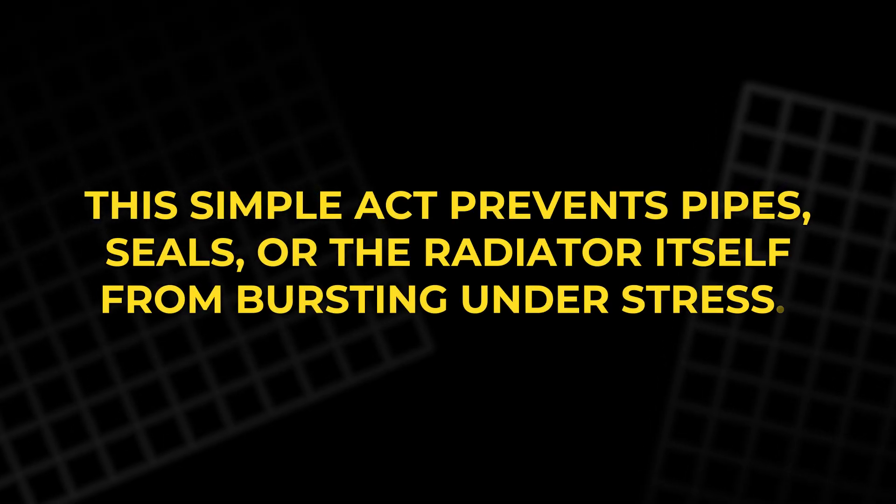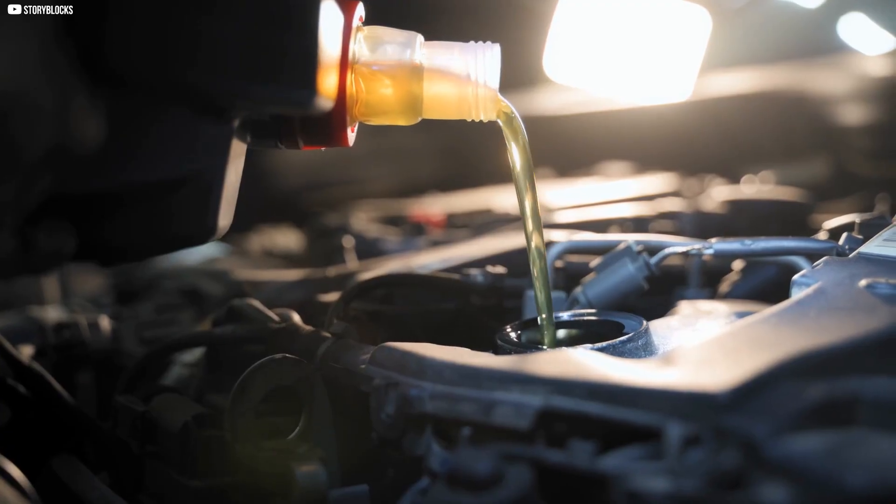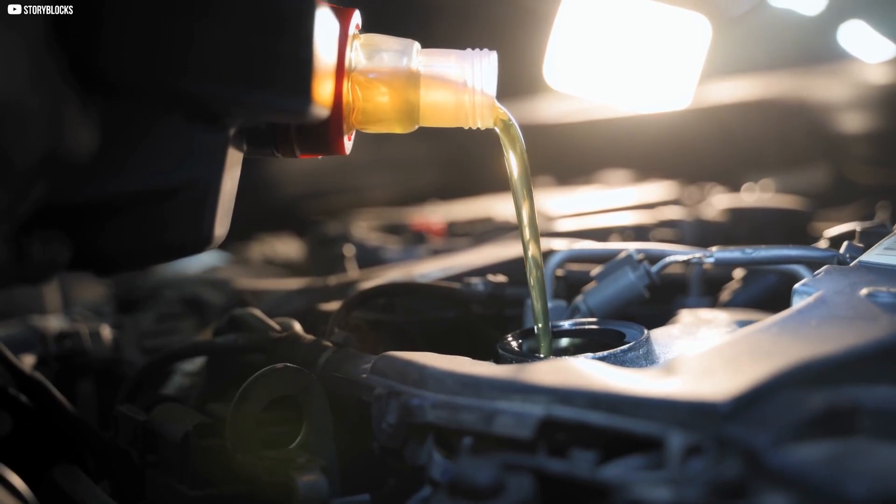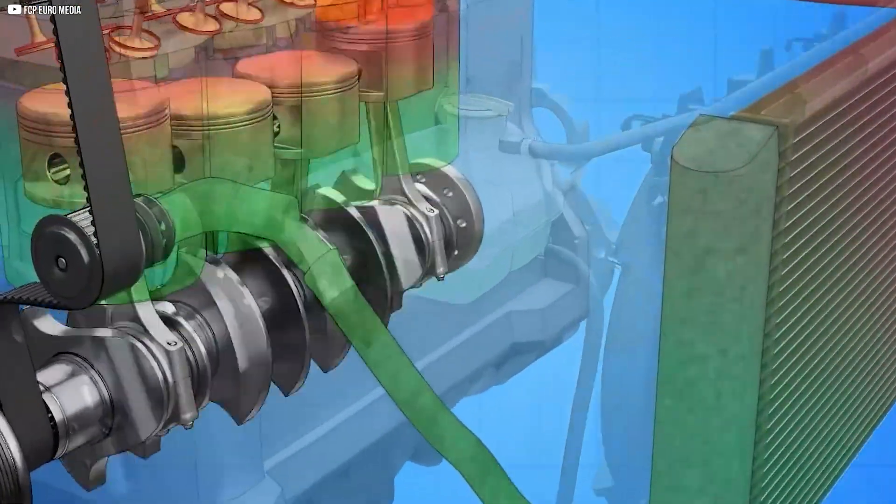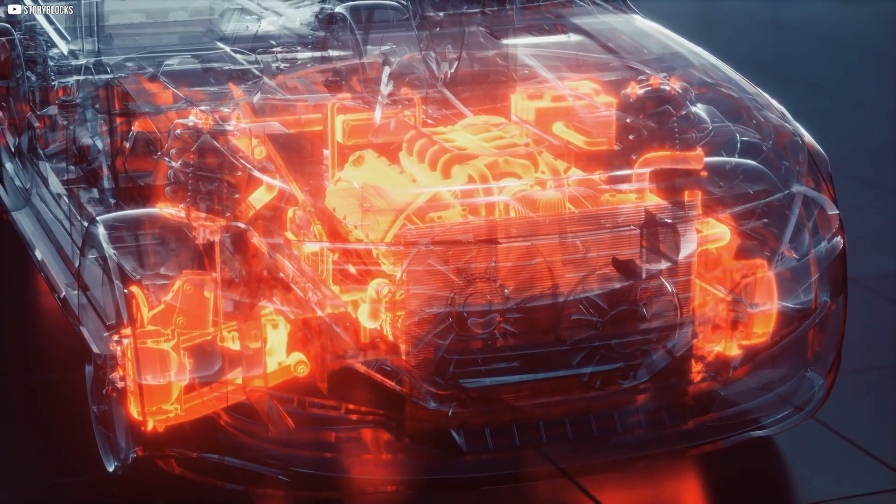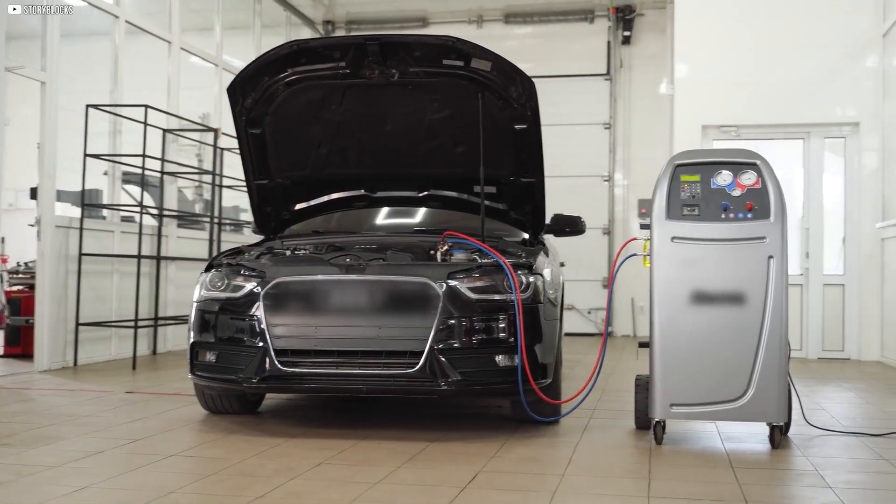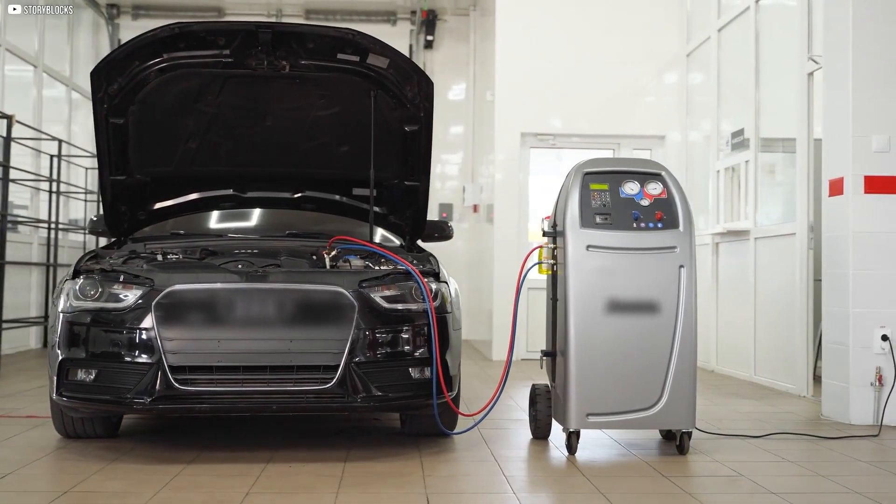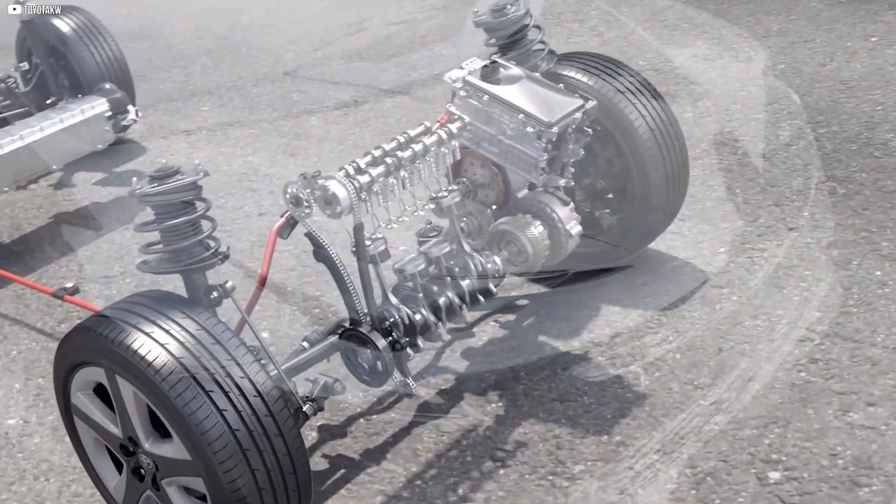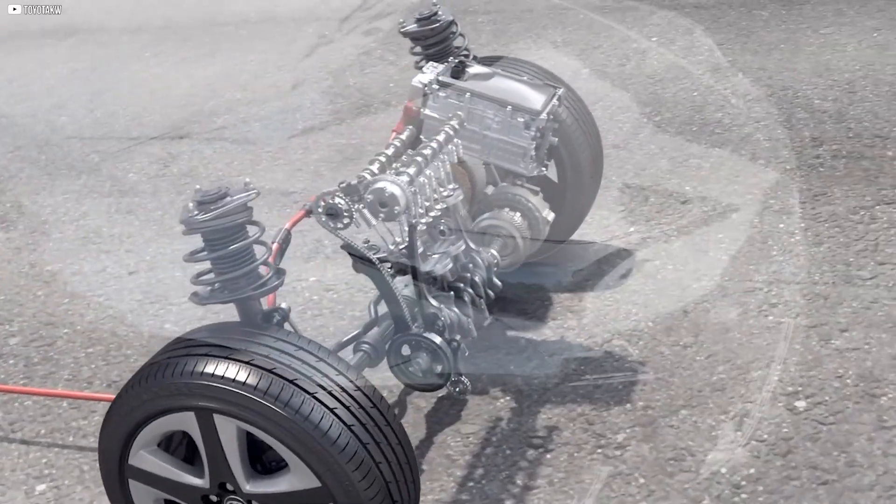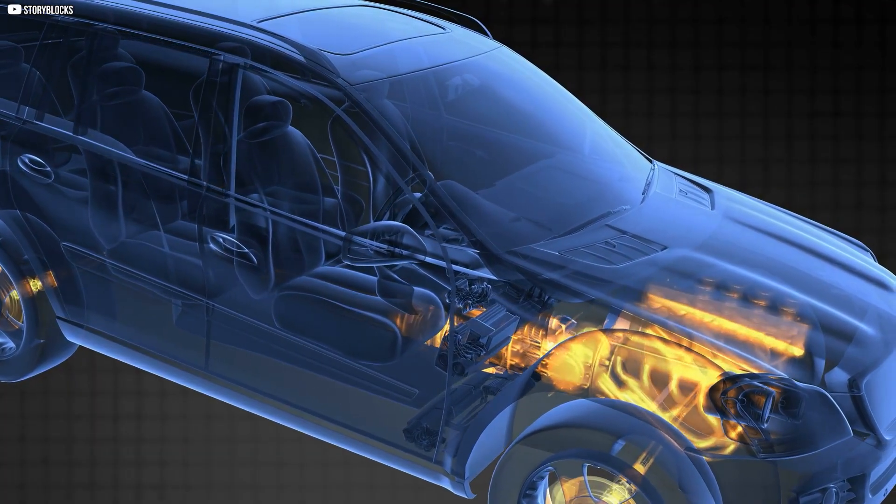Inside the cap sits the outlet valve, designed to open when pressure crosses a safe line. Once triggered, the valve releases both fluid and pressure into the expansion tank. This simple act prevents pipes, seals, or the radiator itself from bursting under stress. Without the release valve, even a short spike could cause lasting damage.